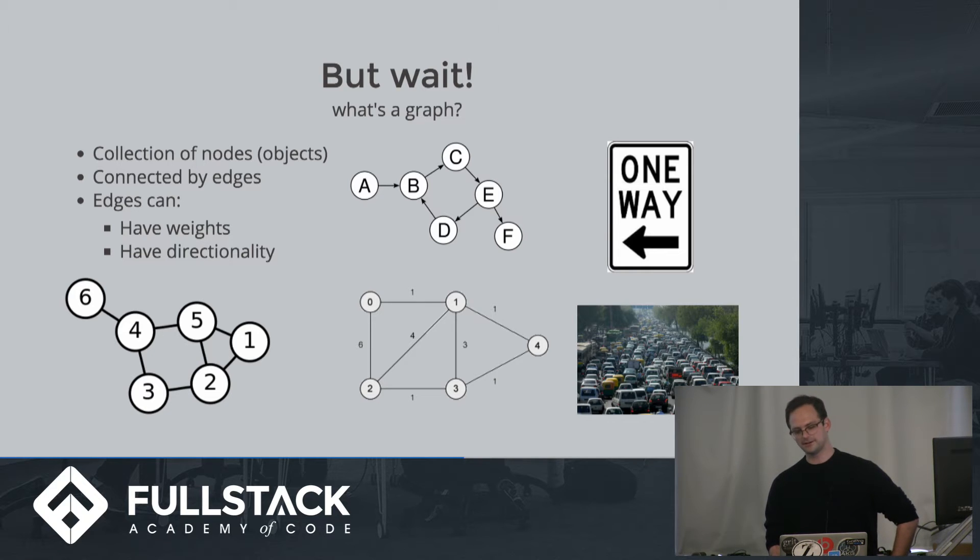Edges can have directionality and they can also have weights. Directionality, if you think about like a one-way street which there are plenty of here in New York, you're not going to be able to go down that street to the other intersection from a certain direction. Edges can also have weights, which I like to equate to traffic. A weight of one would imply maybe that there's not much traffic on that road. But six is like the Van Wyck at rush hour, which is terrible if you've ever gone to JFK during rush hour.